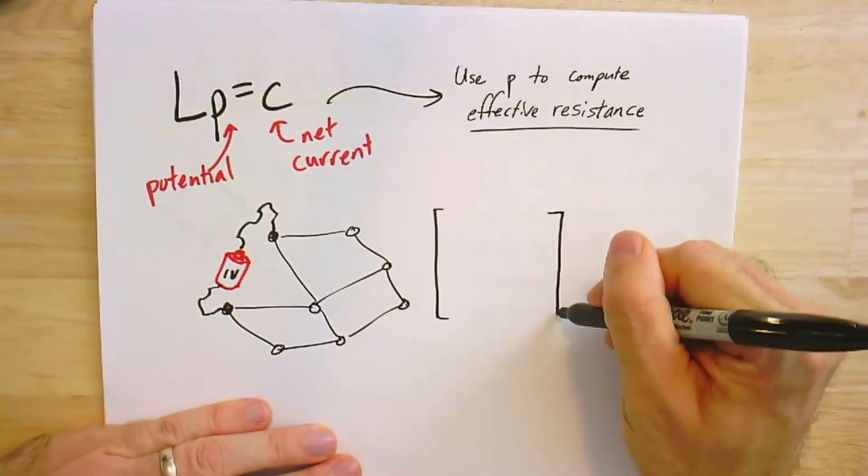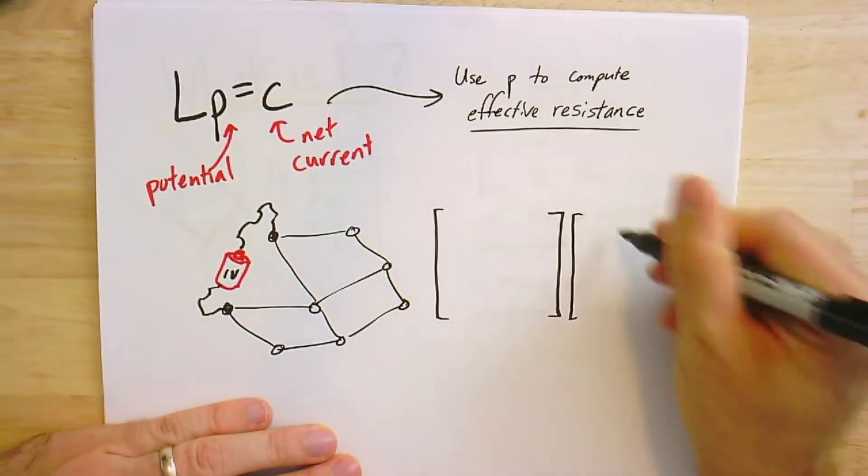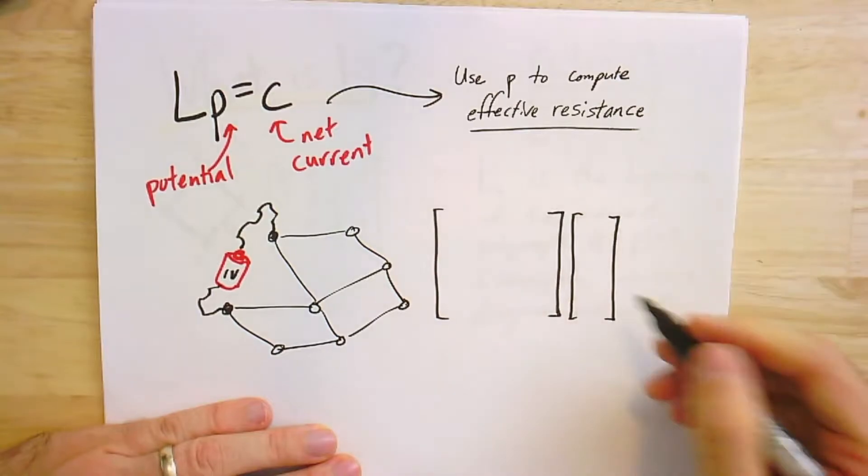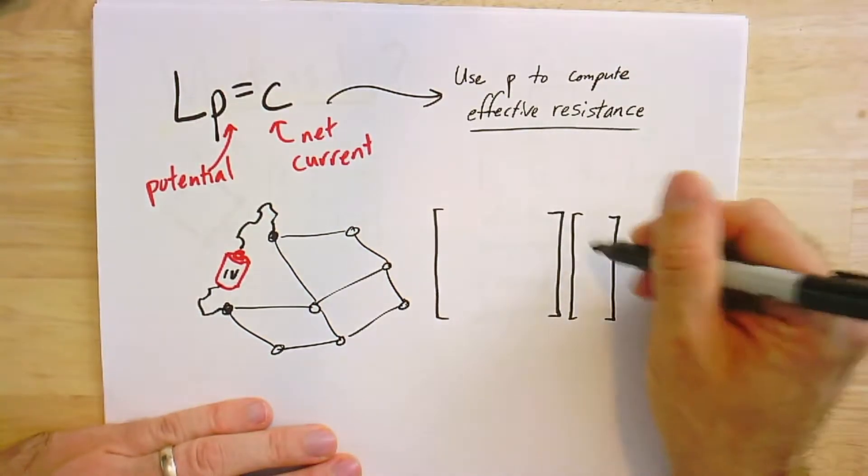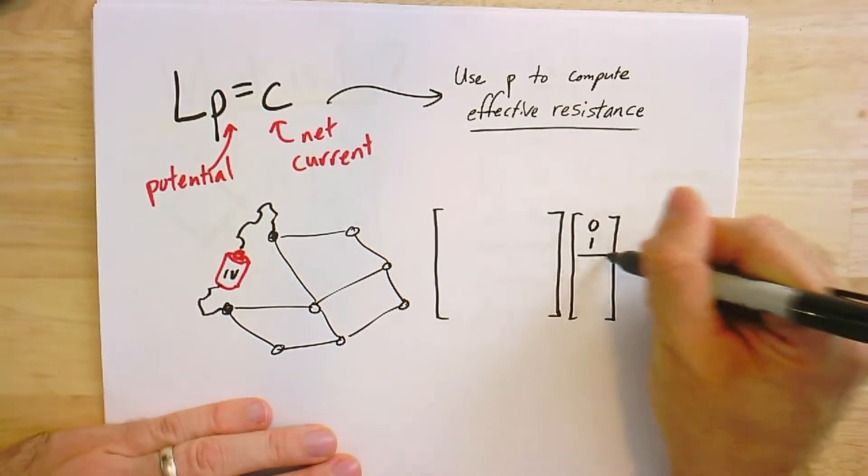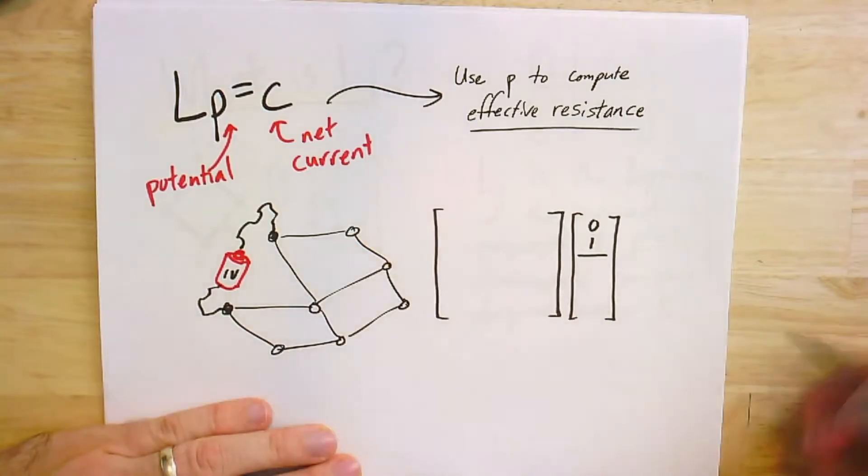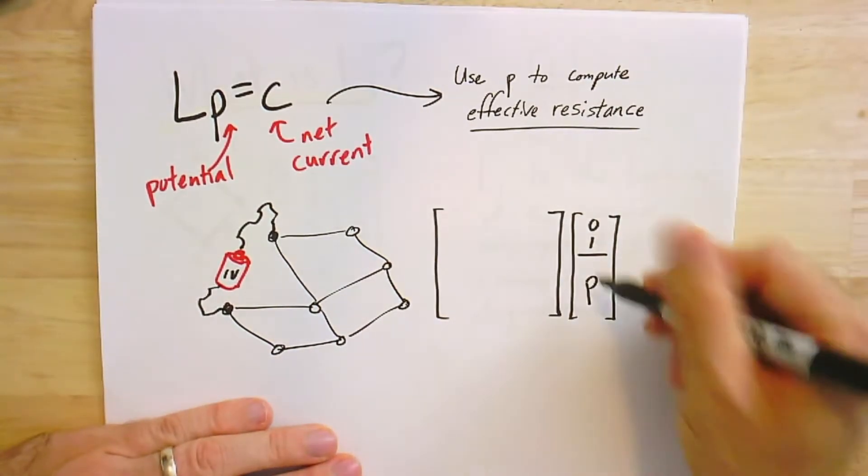To do this in terms of this linear system is a little bit different, because we had our Laplacian, but now we kind of know two of the potentials. We don't actually know what they are, but we know their difference. So we might as well say there's a zero and a one. Let's put these two vertices first in our list—there's a zero and one—and then the rest of the potentials we don't know.